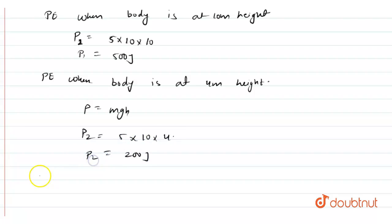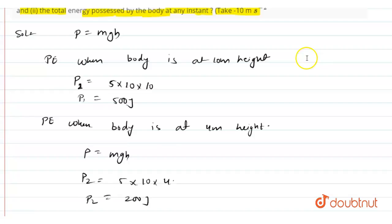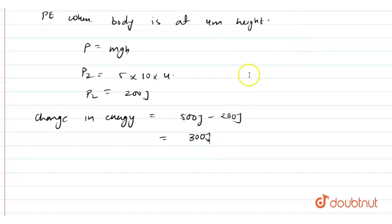So, the change in energy will be 500 Joules minus 200 Joules and the change in energy comes out to be 300 Joules. So, our first part is, we have to find the loss in the potential energy. So, there is a loss of 300 Joules energy.